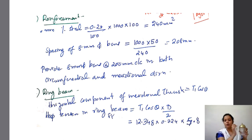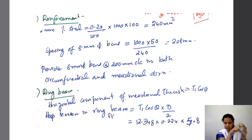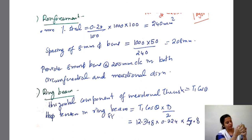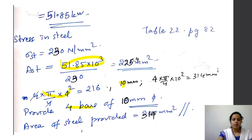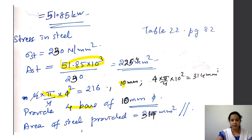Now we design the ring beam. The horizontal thrust component transferred to the ring beam is T₁ cos θ × (diameter/2). Substituting the values, we get a total horizontal force of 51.85 kilo newton.